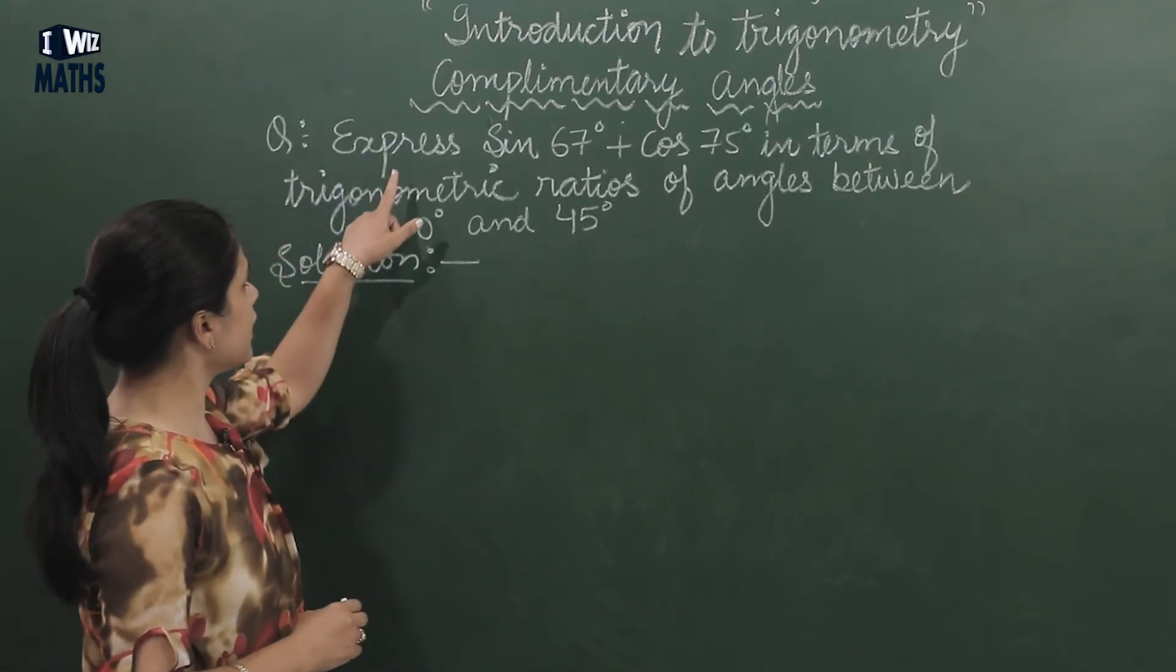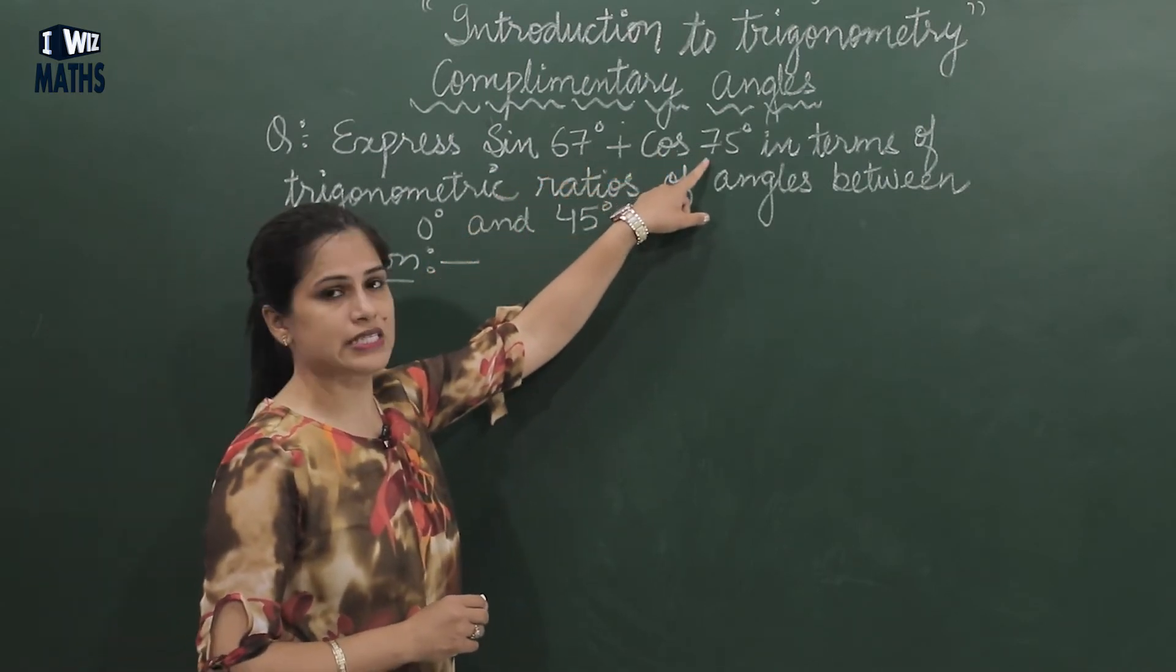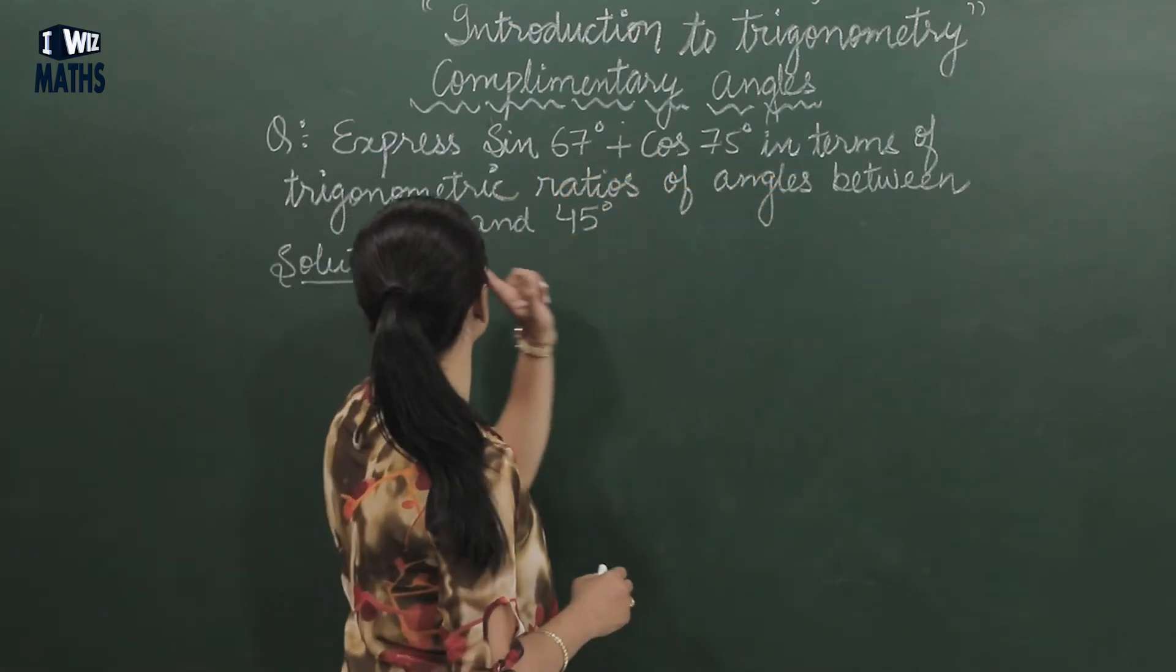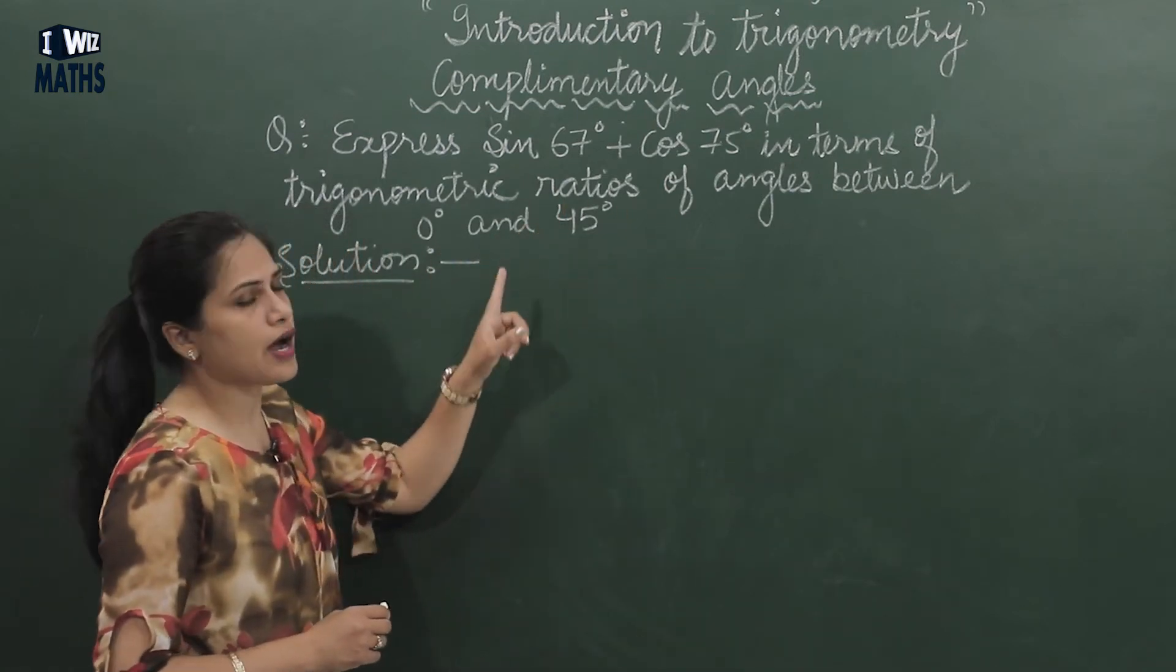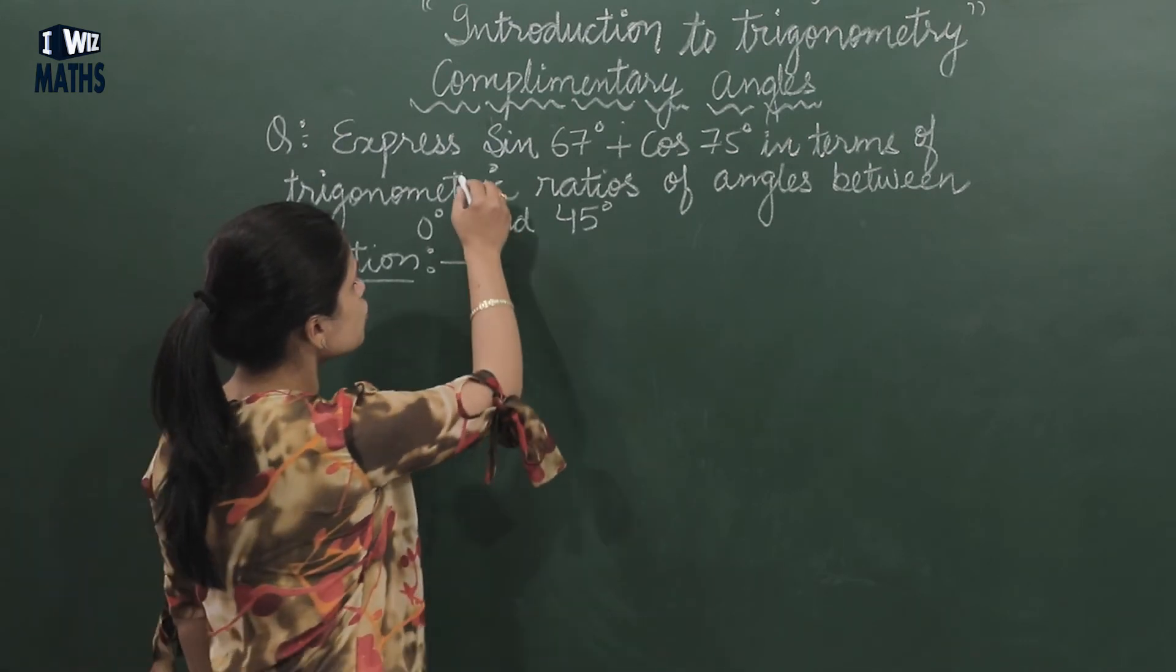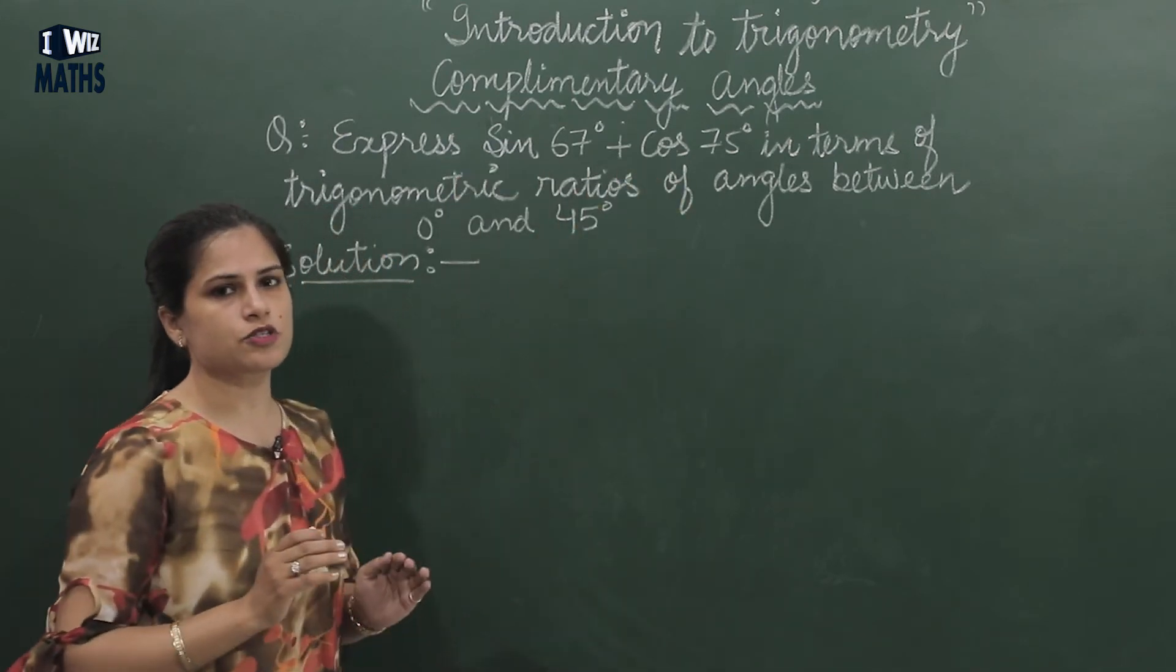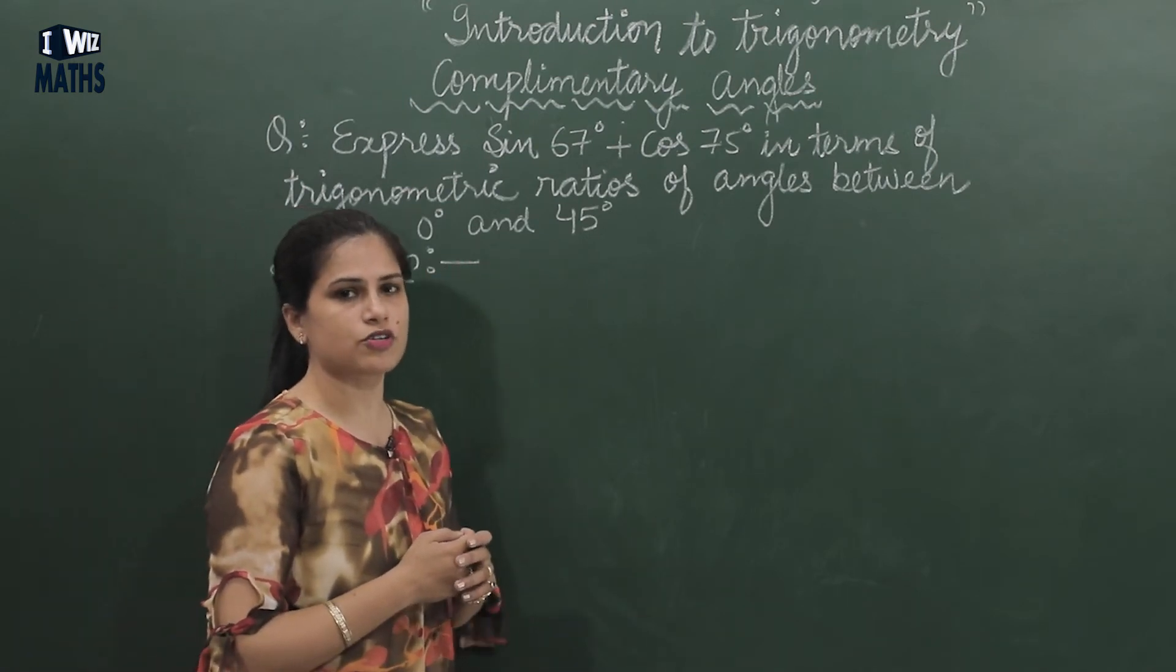Now see what the question is. The question is: express sin 67° + cos 75° in terms of trigonometric ratios of angles between 0° and 45°.